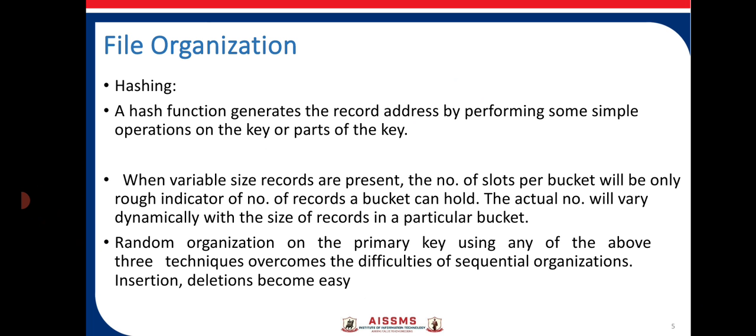If we consider hashing, a hash function generates a record address by performing some simple operations on a key or parts of the key. When variable size records are present, the number of slots per bucket will only be a rough indicator of the number of records a bucket can hold. The actual number will vary dynamically with the size of records in a particular bucket.